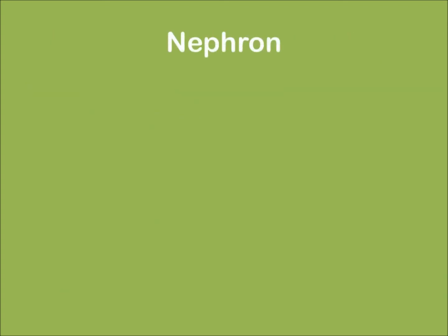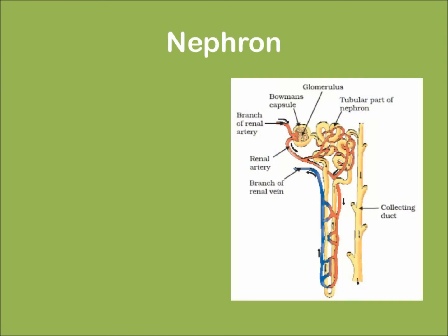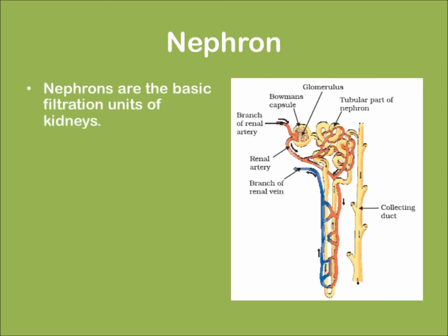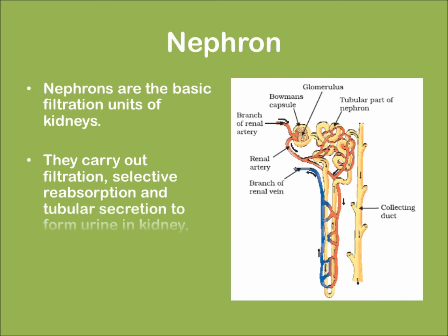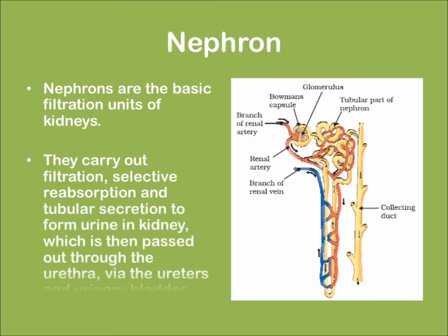Now let us learn about the nephron. Nephrons are the basic filtration units of a kidney. They carry out filtration, selective reabsorption, and tubular secretion to form urine in the kidney, which is then passed out through the urethra via the ureters and the urinary bladder.